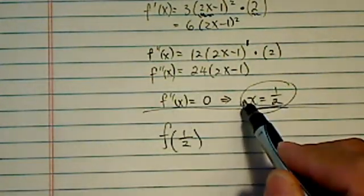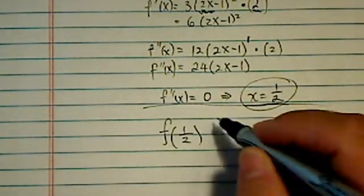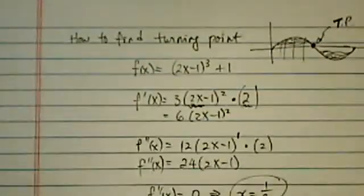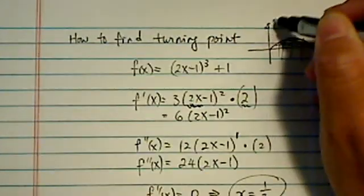Okay, this one, setting it equal to zero, just gives us the x coordinate. Now, in order to find the inflection point or the turning point, the point itself is actually on the function. Right?